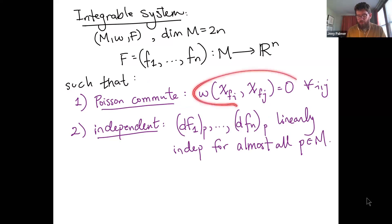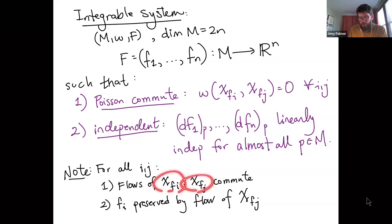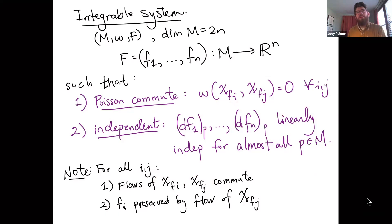The most important consequence of these conditions is that the flows of these vector fields commute, which follows from the functions Poisson commuting. So each of these functions gives you an R action, and all those R actions commute, meaning F generates an R^n action.